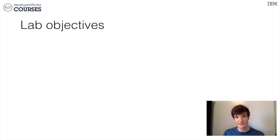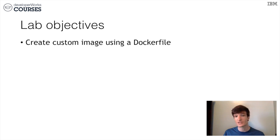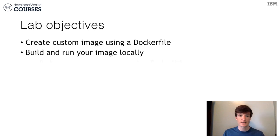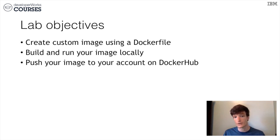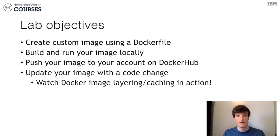We're going to learn more about layering and caching firsthand in our lab today. We're going to create a custom Docker image by writing a Dockerfile, build it using docker build, and run it using docker run locally on our host. Once we're happy with our new custom image, we'll push it to our custom account on Docker Hub, where you'll be able to see it publicly on the internet. We'll also demonstrate the benefits of layer caching by making a small update to our image, rebuilding, and re-pushing to see many of those layers being reused. Let's get started.